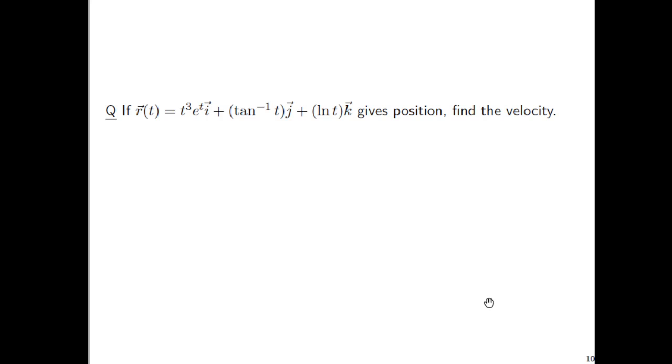Okay, so I hope that question didn't look too bad. Let's do another one. This is just more than anything my excuse to review some derivative rules. So, let's say r of t is given this way: t cubed times e to the t times i, the i vector, plus arc tangent of t times the j vector, plus ln of t times the k vector. Let's say that gives position. Find the velocity.